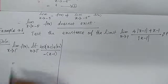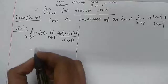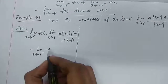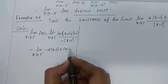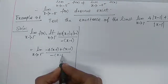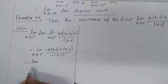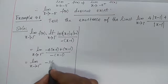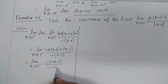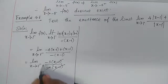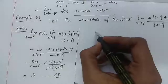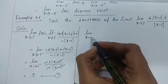So lim (x→1⁻) f(x) = lim (x→1⁻) [−4(x−1) + (x−1)] / [−(x−1)] = lim (x→1⁻) [−3(x−1)] / [−(x−1)]. The (x−1) terms cancel, giving the value 3. This is the left limit, equation number 1.